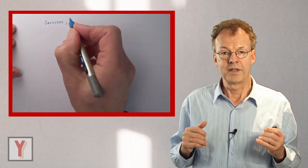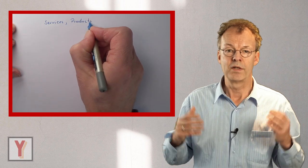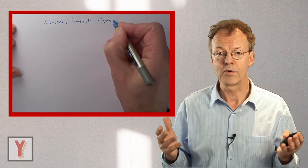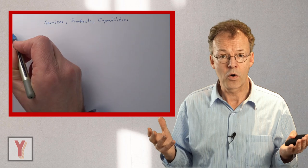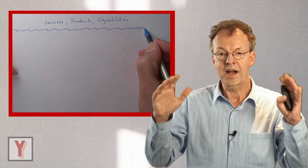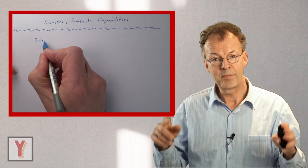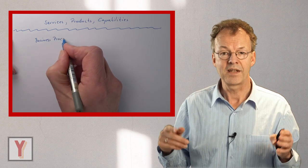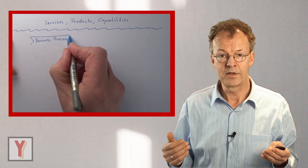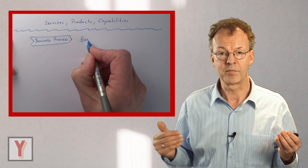So where are business processes and workflows in the bigger picture? For example, in the picture of an enterprise architecture. At a very high level in an organization, we have products or services or capability, whatever they are called here. And this high level is supported by the business processes that enable the organization to produce these services and products.